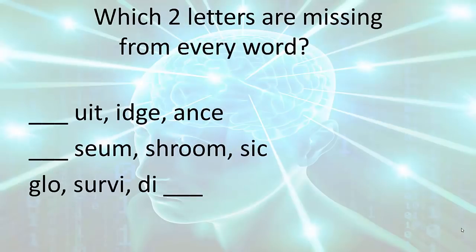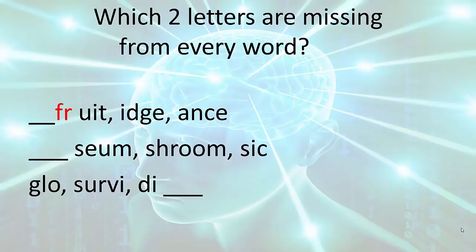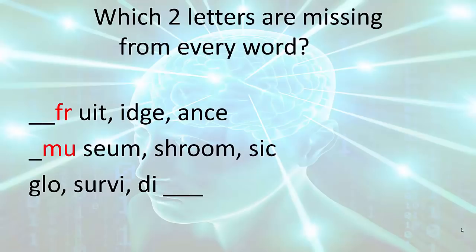I want you to think of two letters that are missing that will make three words. So, there's two letters in front of the first and second word. And the last two letters of the three words in the third place. So, I give you 10 seconds to do the first group of words. And the two letters are fr, fruit, fridge, France. 10 seconds to do the second group. And the two letters are mu, museum, mushroom, music. And the last two letters of the three words in the third group. Here's 10 seconds. And the two letters are ve, glove, survive, dive. Let's continue.